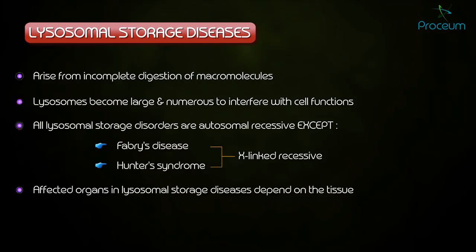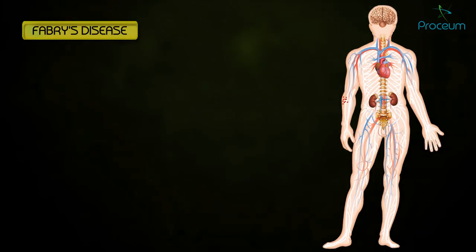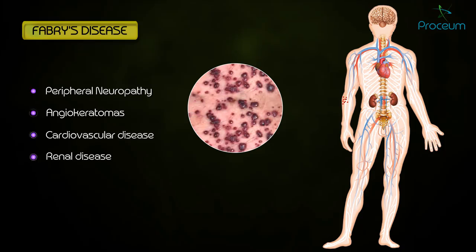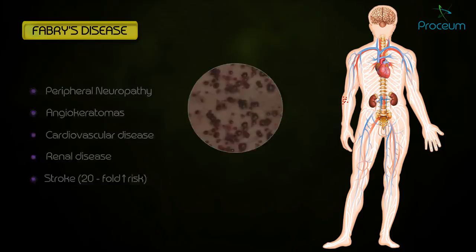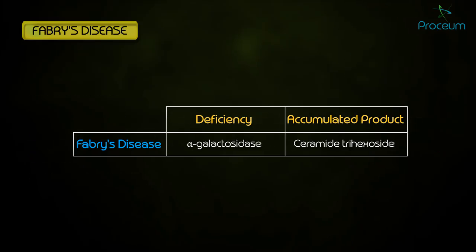Affected organs in lysosomal storage diseases depend on the tissue where most of the material to be degraded is found and where degradation normally occurs. Fabry's disease presents with peripheral neuropathy of the hands and feet, angiokeratomas, cardiovascular and renal disease, and a 20-fold increased risk of stroke. It is caused by a deficiency in alpha-galactosidase.